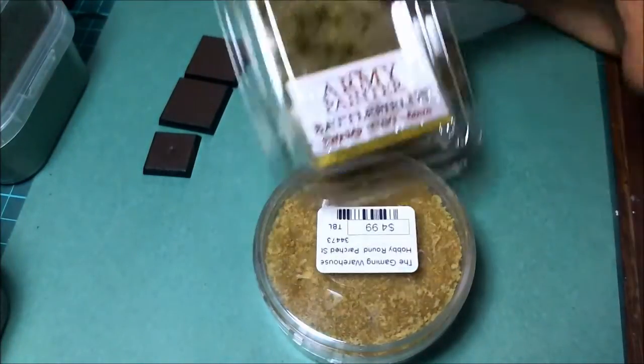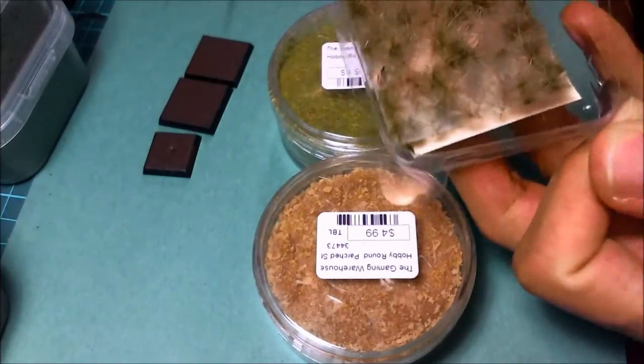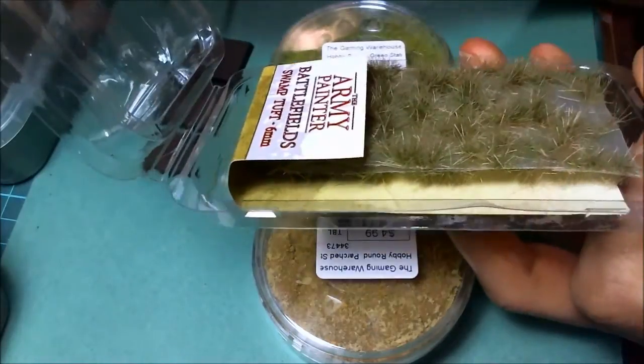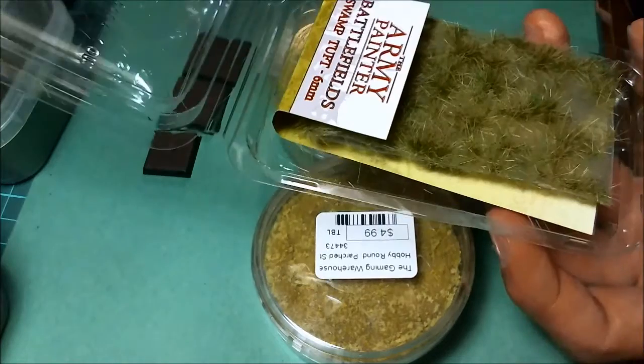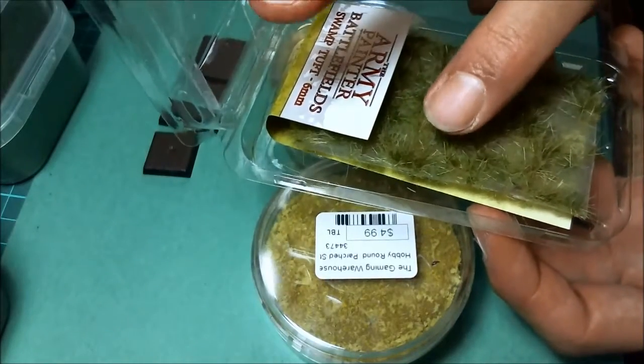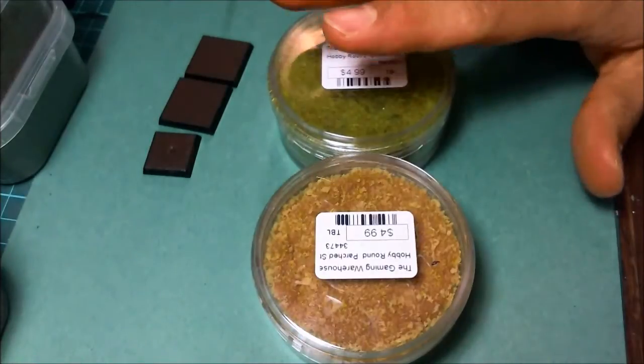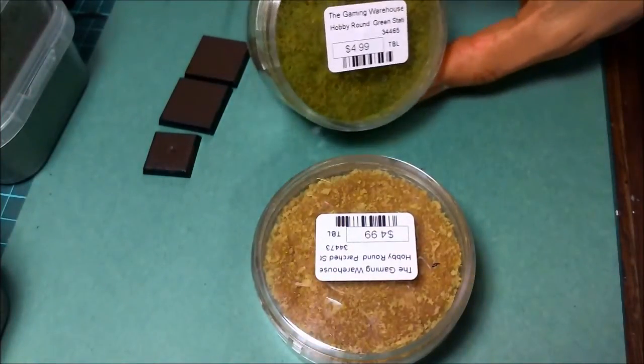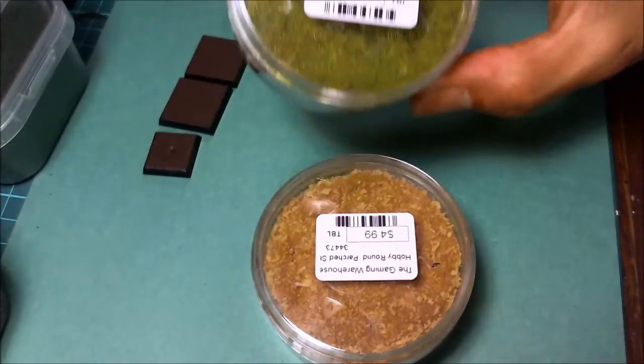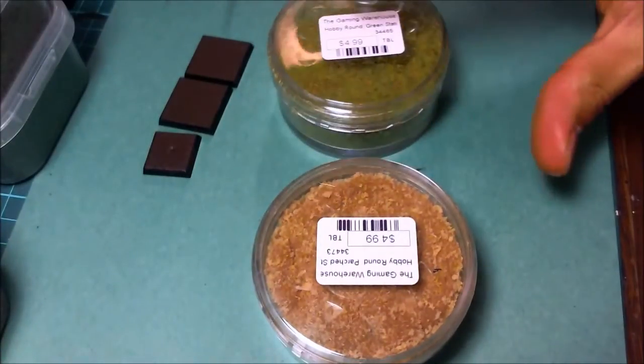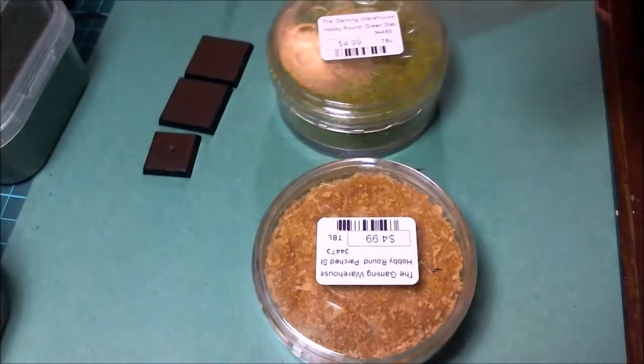These are Gale Force 9, I think. You can also get pre-made tufts. I got a whole bunch from Army Painter. These are $5.00. These go about the same amount. Obviously they go a lot further with the loose grass. The difference with the tufts though, they come in different sizes. This one says 6mm. That means the longest strand is 6mm. But there are lots of different lengths on each tuft.